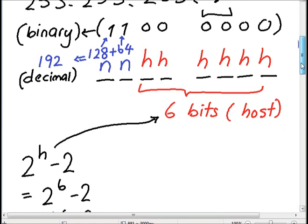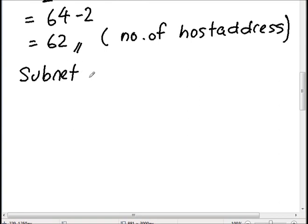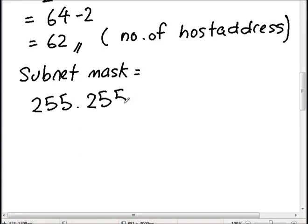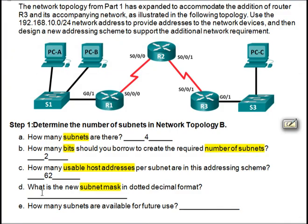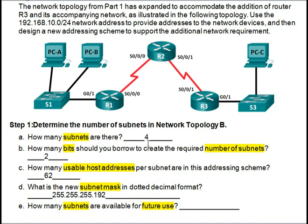So the final subnet mask for this question is 255.255.255.192. For the last part, how many subnets are available for future use? We planned for 4 subnets and have used all of them in this addressing scheme, so we do not have any remaining subnets. The total number of subnets available for future use is zero.